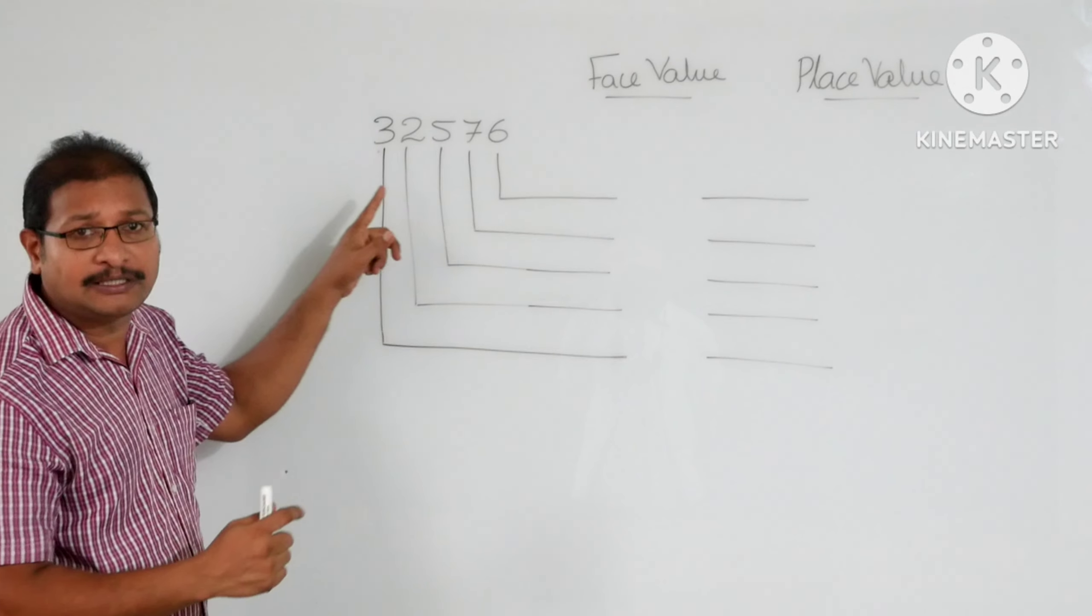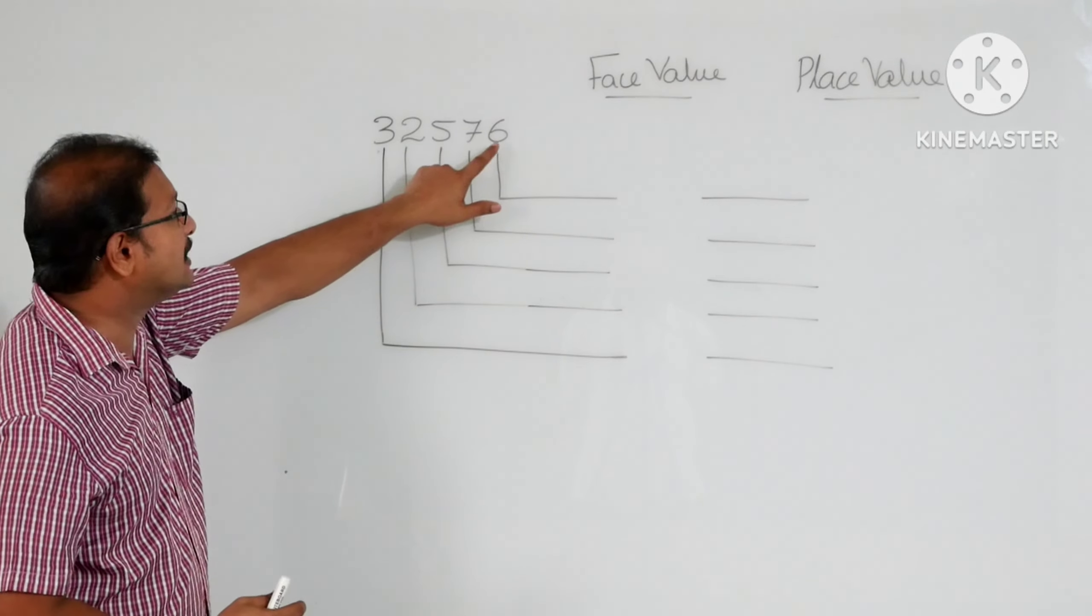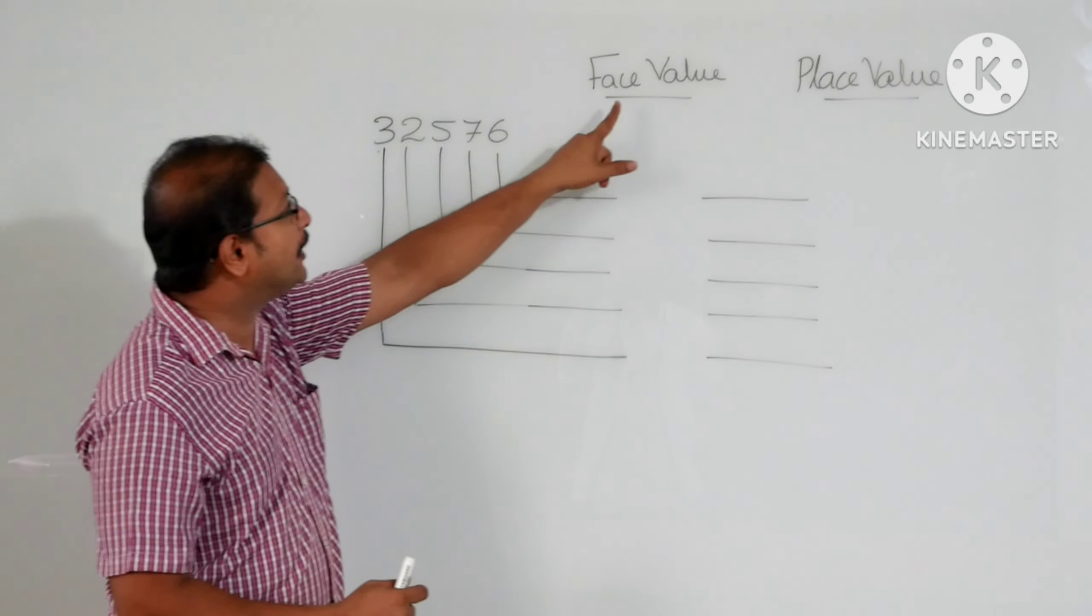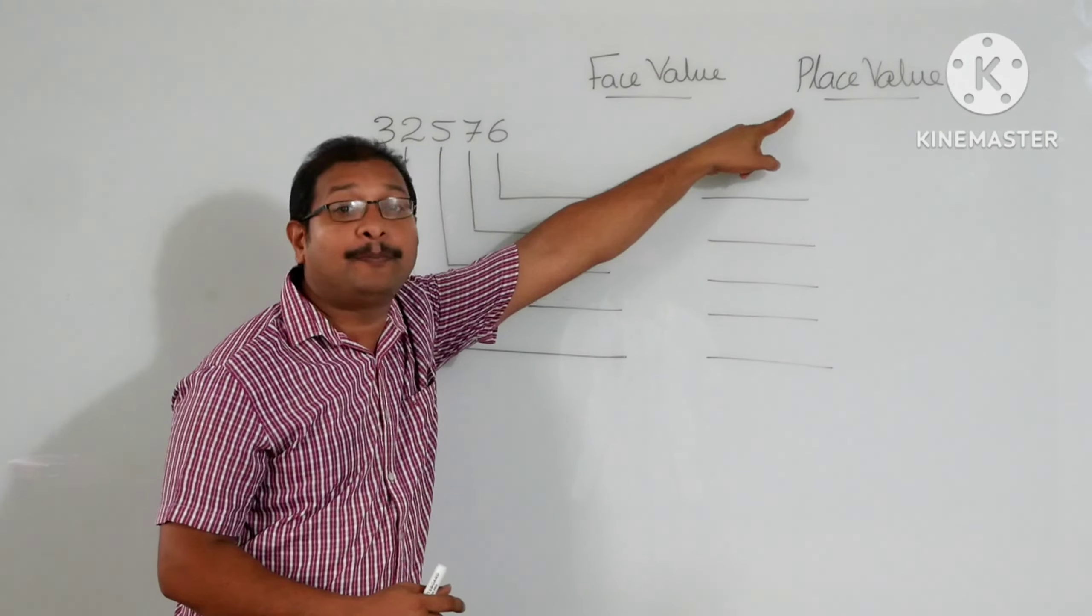The number I just have is 32576. Here we are going to find out the face value and place value. Ready?